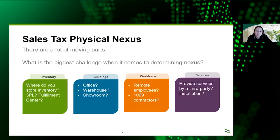Now for sales tax physical nexus — it's a bit simpler than income tax standards. Inventory: where you're storing inventory in a state, including those storing it in a 3PL — third-party logistics — or in a fulfillment center, that counts as a nexus-creating activity even though the inventory may not be completely under your control. Buildings — office, warehouse, showroom — any kind of physical brick-and-mortar presence in the state will give you physical nexus.